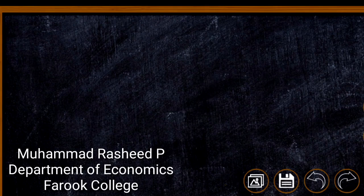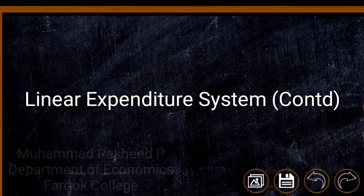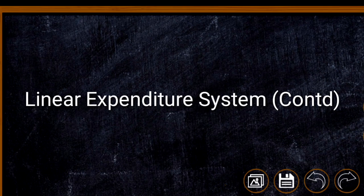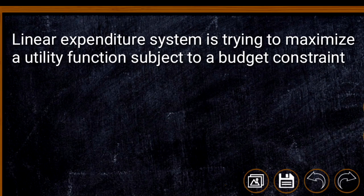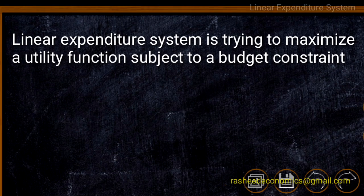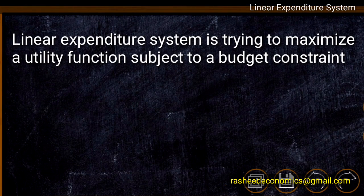Hi friends, this video is a continuation of our previous video on the linear expenditure system. In our previous video, we said that the linear expenditure system tries to maximize a utility function subject to a constraint — the purpose is to maximize the utility of an individual by consuming different groups of commodities subject to a budget constraint, where income is the limitation.